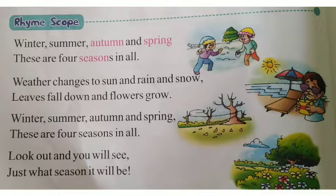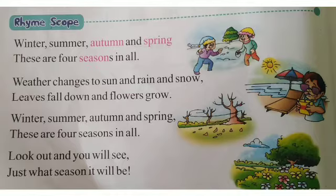Let us recite this poem once again. Winter, summer, autumn and spring. These are four seasons in all. Weather changes to sun and rain and snow. Leaves fall down and flowers grow. Winter, summer, autumn and spring. These are four seasons in all.